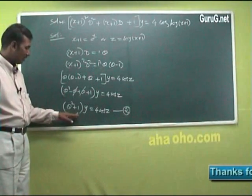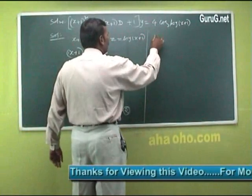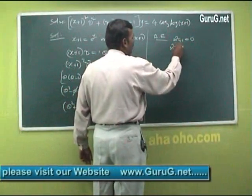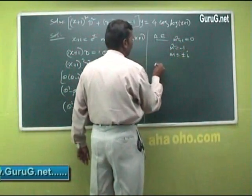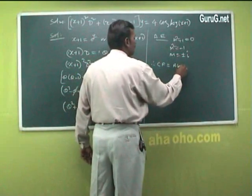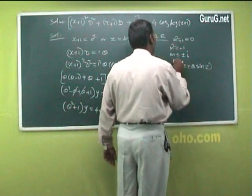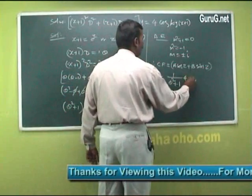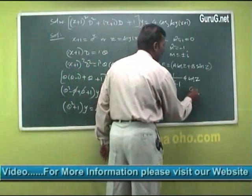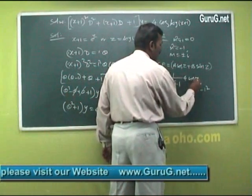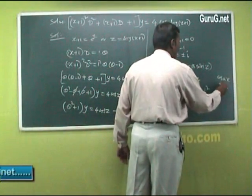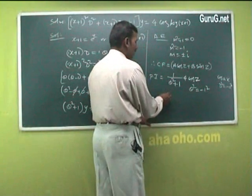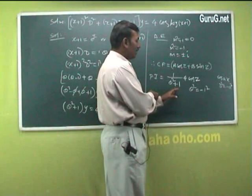This is a linear equation with constant coefficients. The auxiliary equation is m²+1 = 0, giving m = ±i. Therefore CF = A cos z + B sin z. For the particular integral: PI = [1/(θ²+1)]·4cos z. Since θ² is replaced by −1² = −1, the denominator becomes −1+1 = 0, so we use the repeated-root method: multiply numerator by z and differentiate denominator.